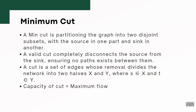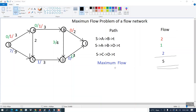Now let's focus on the minimum cut. A min cut is partitioning the graph into two disjoint subsets with the source in one part and the sink in the other. A valid cut completely disconnects the source from the sink. A cut is a set of edges whose removal divides the network into two halves X and Y, where S is in X and T is in Y, and the capacity of a cut equals the maximum flow.